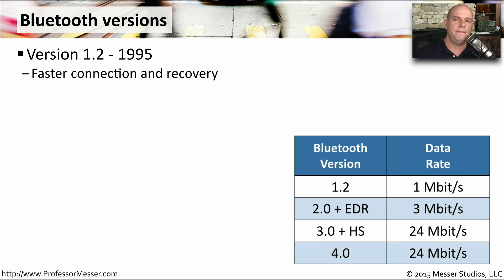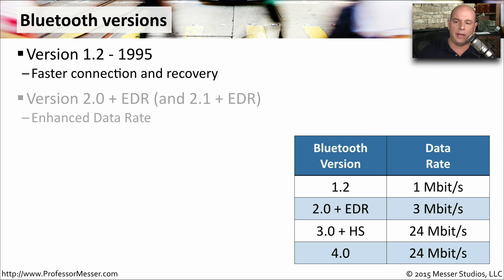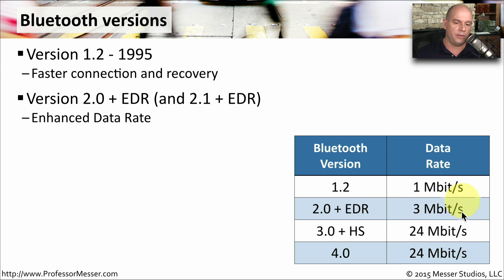There have been many versions of Bluetooth through the years. One of the very first was version 1.2 back in 1995, which allowed us to connect Bluetooth devices, disconnect, and then reconnect them very easily. Version 2.0 provided something called enhanced data rate, giving speeds of about 3 megabits per second with 2.0 and 2.1, which included enhanced data rate.